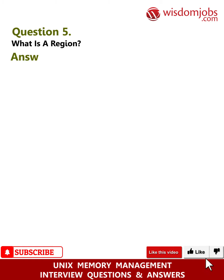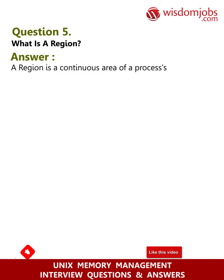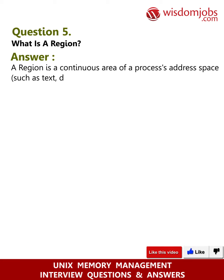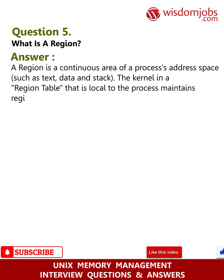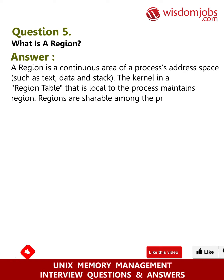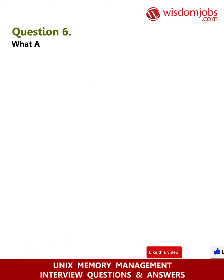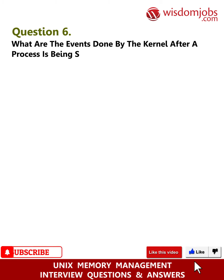Question 5: What is a region? Answer: A region is a continuous area of a process's address space, such as text, data, and stack. The kernel maintains regions in a region table that is local to the process. Regions are shareable among processes.